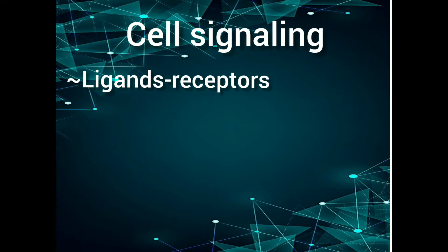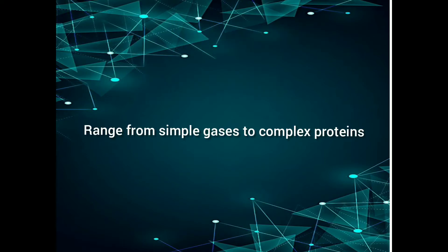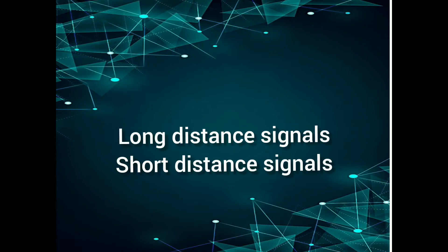Structurally, the signaling molecules which plants and animals use range from simple gases to very complex proteins. Some of these signals travel long distances, while some act locally.